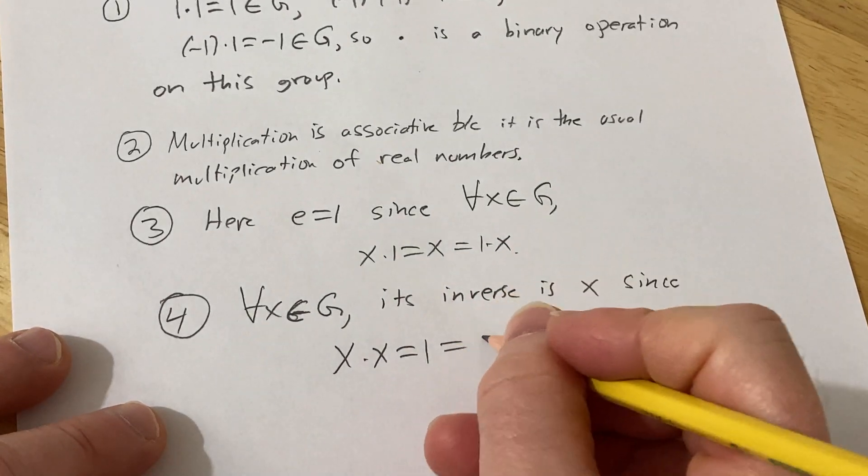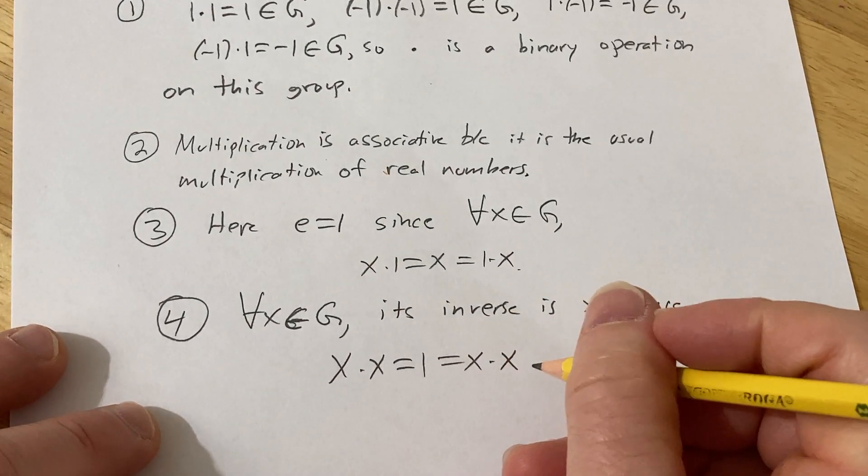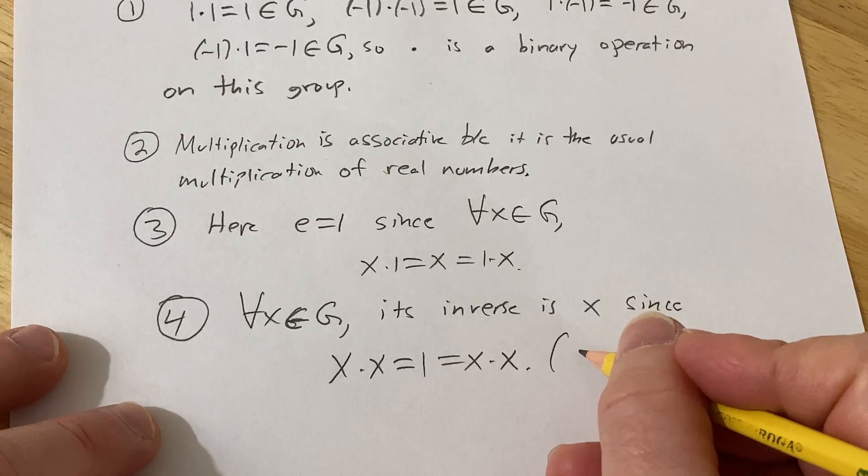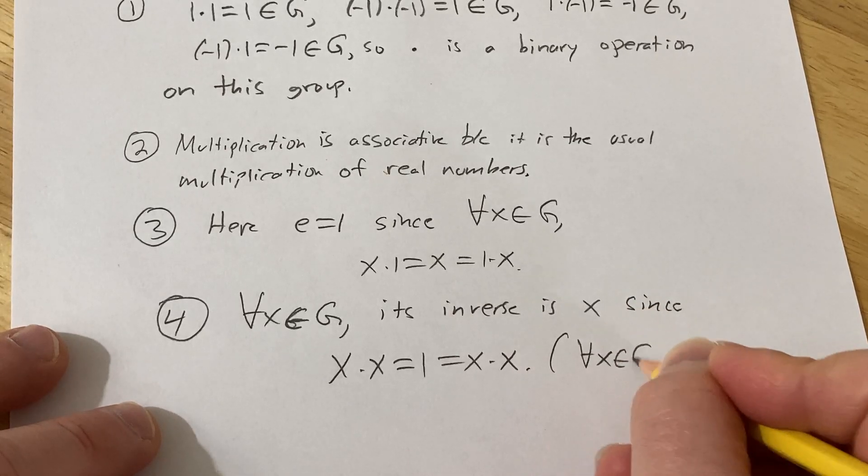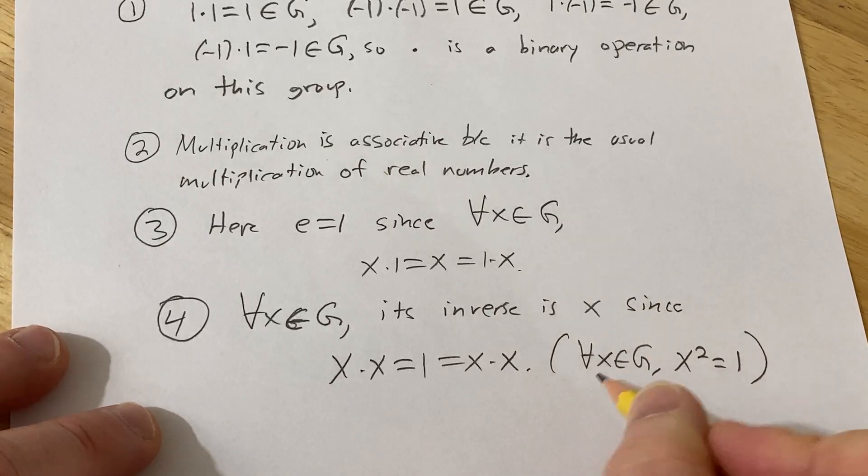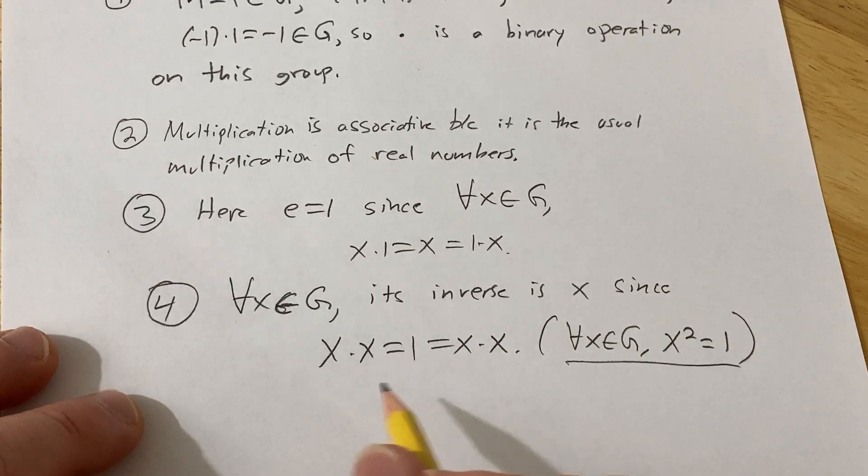since x times x is equal to 1, which is the identity, and that's equal to x times x. So basically, we have for all x in g, x squared is equal to 1. That's what we have here. So every element is its own inverse. And very easy to check this as well.